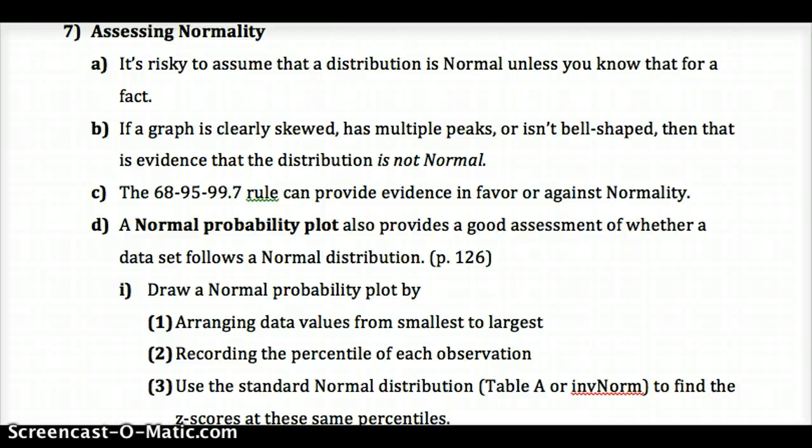Never assume that a distribution is normal unless you know it or unless you can see it in the numbers. If a graph's skewed, if there's multiple modes which would appear as peaks, if it's not got a bell shape, then that's all evidence that it's not normal. We can only apply this approximation for the 68-95-99.7 rule with a normal curve. It can also provide us evidence if the curve is normal or not. If it's exactly normal, it'll fall under those exact values. If it's approximately normal, they'll be very close. If it's not normal, the values are far off.